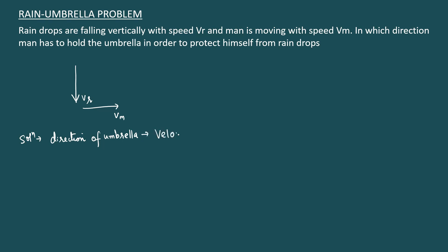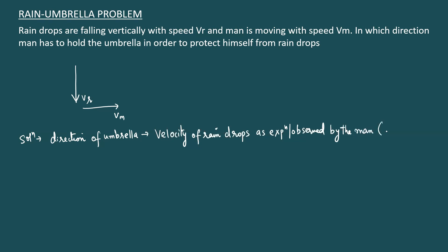The direction of the umbrella is the velocity of the raindrops as experienced or observed by the man. This is simply the direction of the umbrella — the man holds the umbrella in the direction of the velocity of the raindrops as observed by him, which is nothing but vrm, the relative velocity of rain with respect to man.